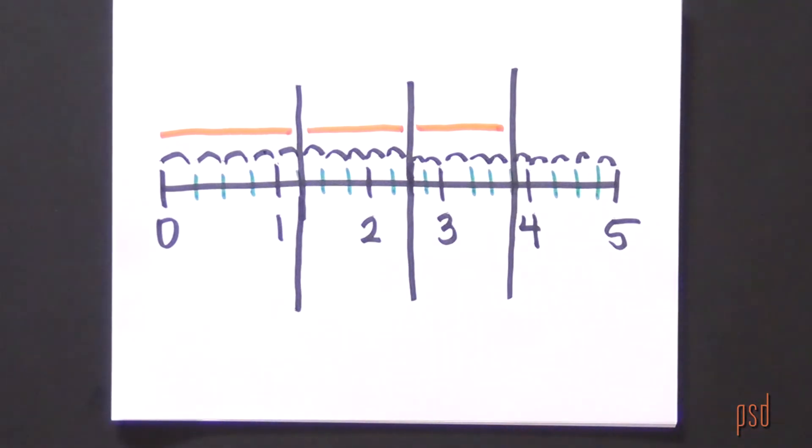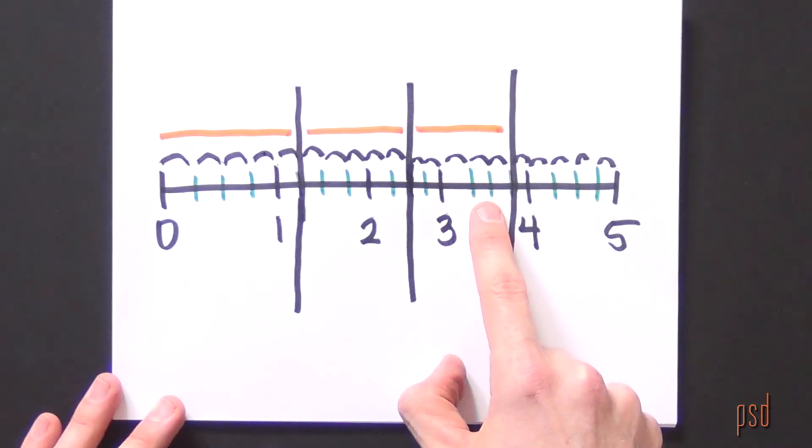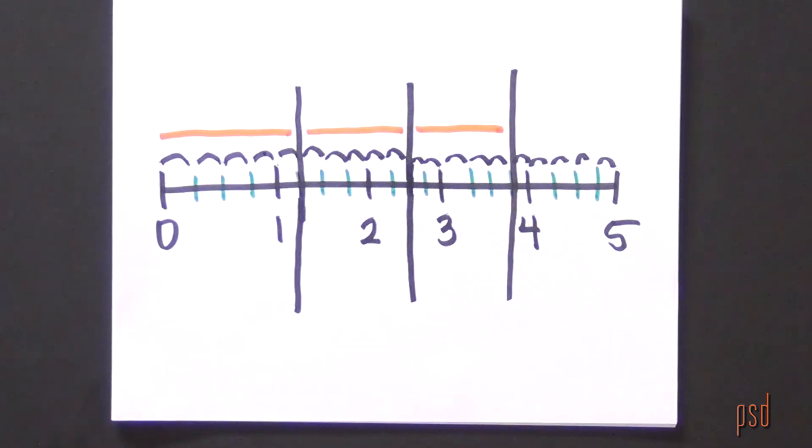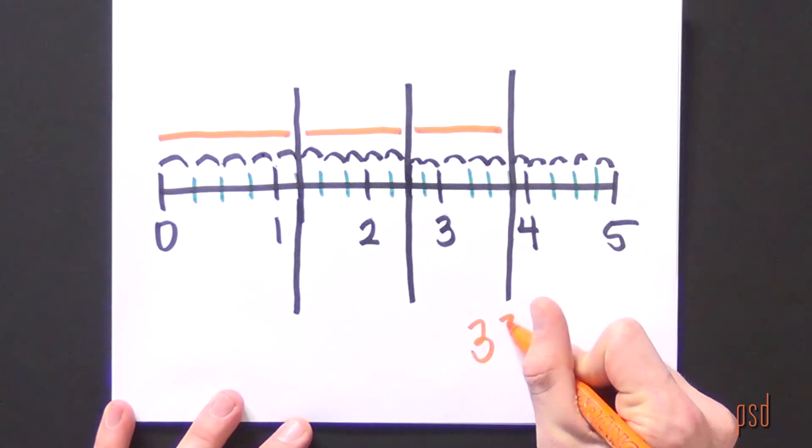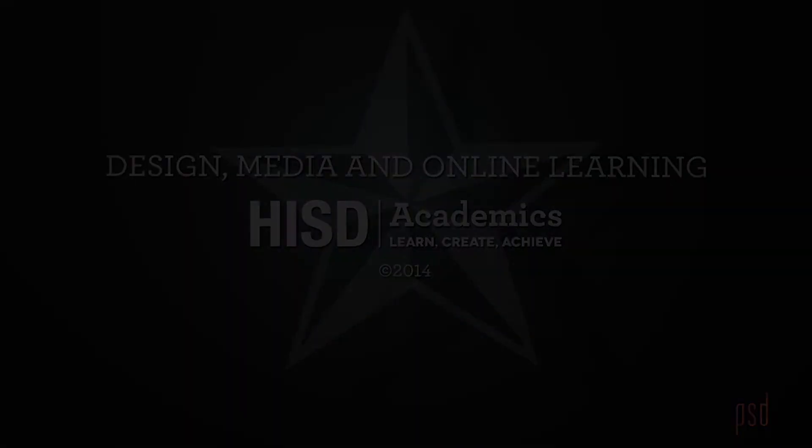This means that Tom used one, two, three feet of ribbon and three and one-fourth, three and two-fourths, three and three-fourths feet of ribbon. Can you see that? This means that Tom used three and three-fourths feet of string for his project.